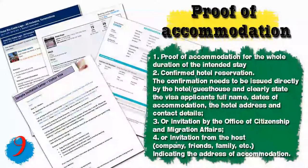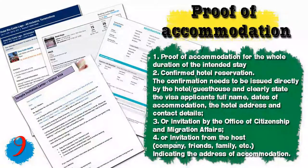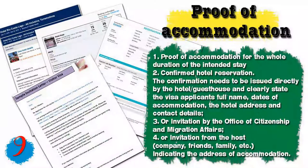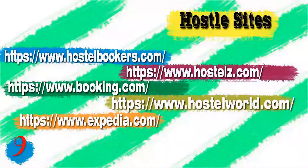Document nine is proof of accommodation for the whole duration of your stay. You need a confirmed hotel reservation issued directly by the hotel, clearly stating your full name, dates of accommodation, the hotel address, and contact details. If you don't have a hotel reservation, you will need an invitation from the office of citizenship and migration affairs or from a host — a company, friends, or family — indicating the address of accommodation.